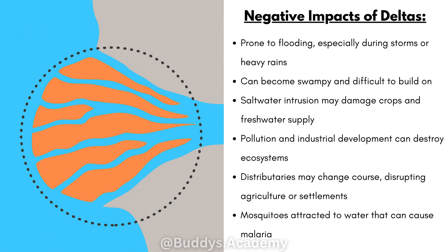Now what are the negative impacts of deltas? Firstly, they are prone to flooding, especially during storms or heavy rains. Secondly, they can become swampy and difficult to build on. Thirdly, salt water intrusion may damage crops and fresh water supply. Pollution and industrial development can destroy ecosystems. Distributories may change course, disrupting agriculture or settlements. And because there is standing water, mosquitoes are attracted and that can cause malaria.